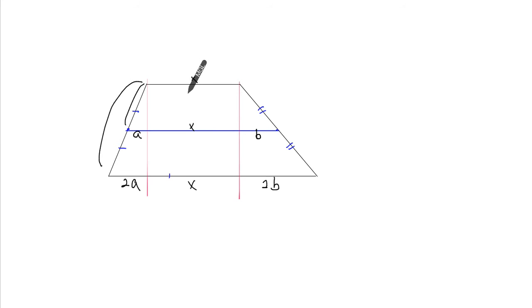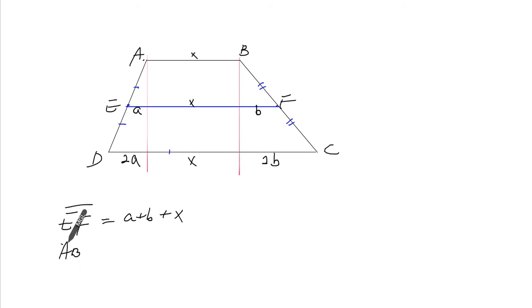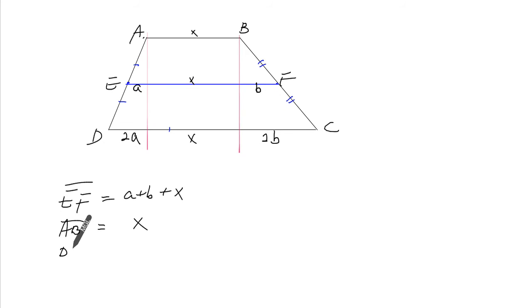So the middle length, let's label some corners here. A, B, C, D, E, F. So, EF is A plus B plus X. AB is X. And DC is 2A plus 2B plus X.